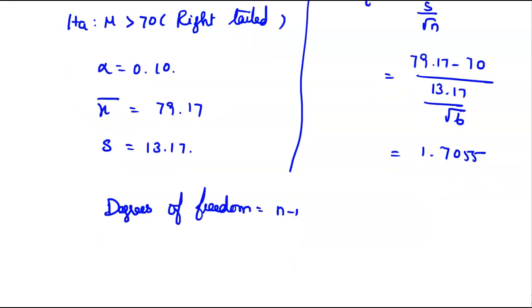Now degrees of freedom equal to n minus 1, which is 6 minus 1 equals 5. The p-value here for the calculated 1.7055 is 0.0744 from the table.